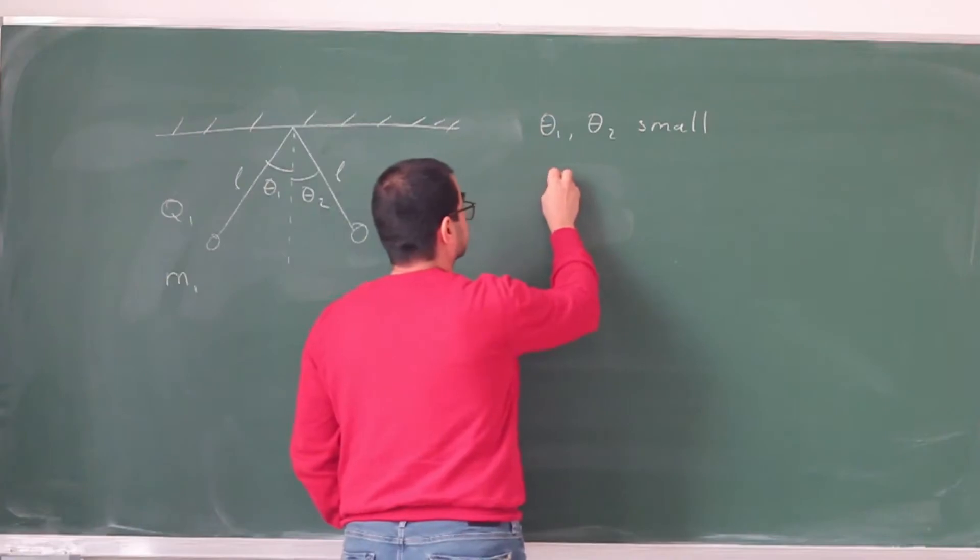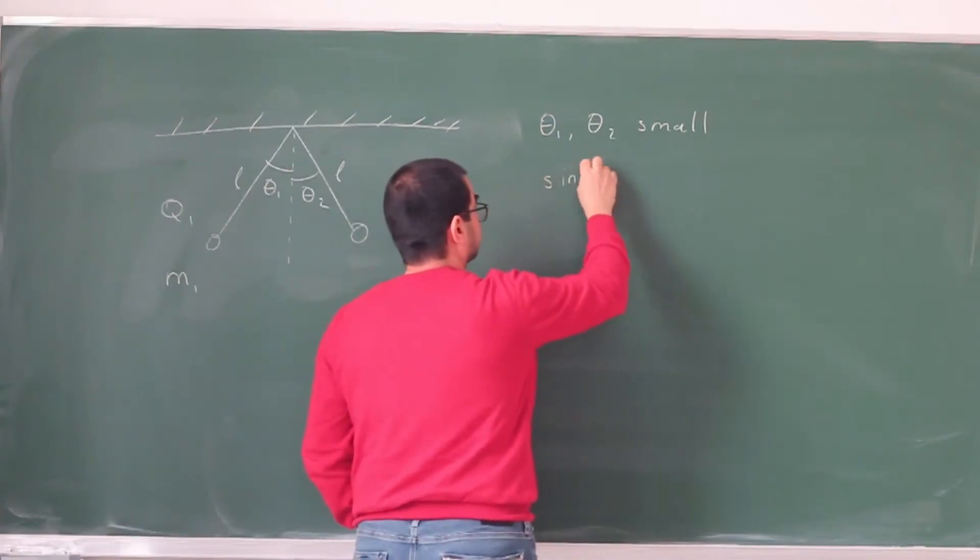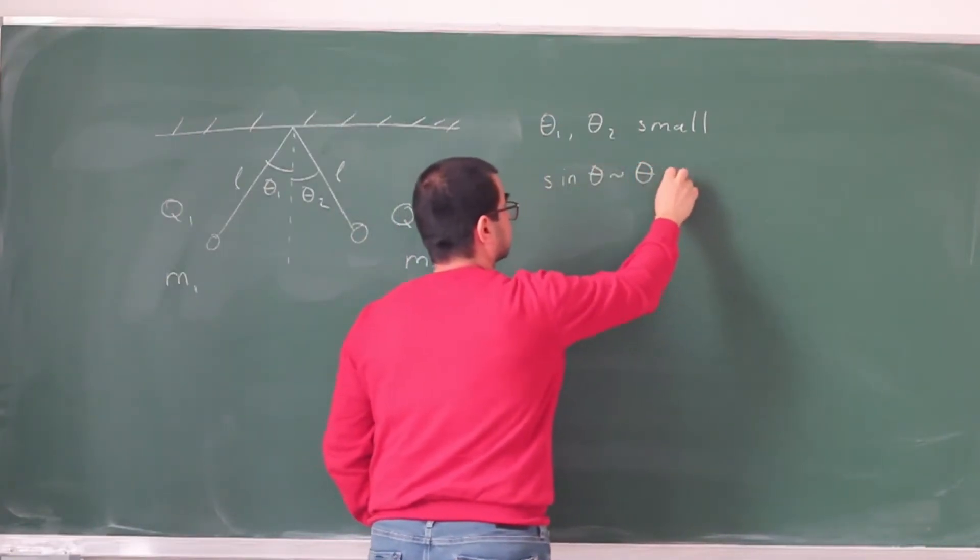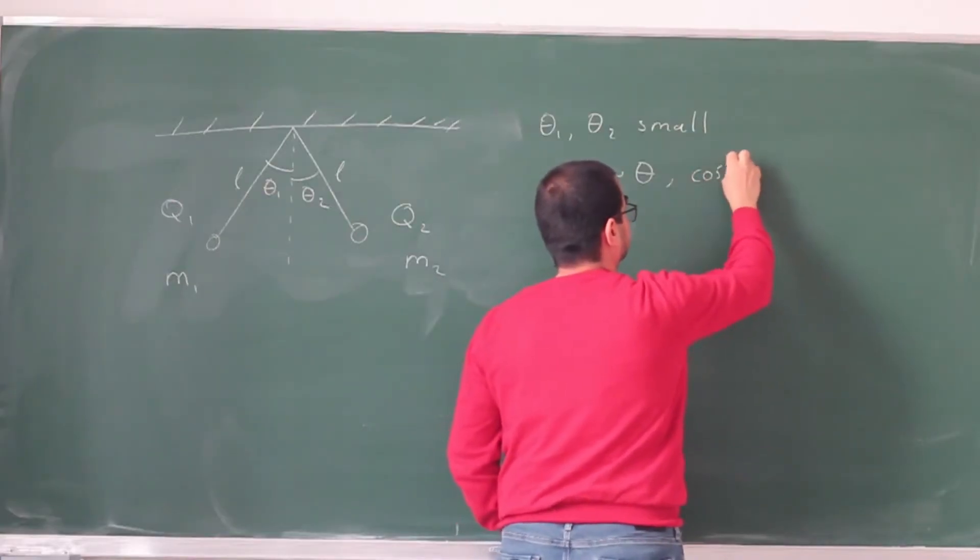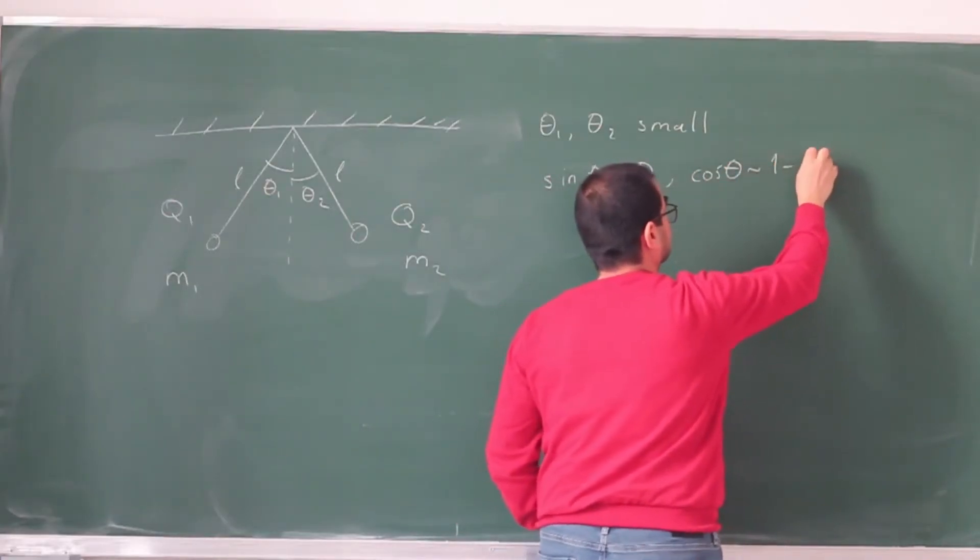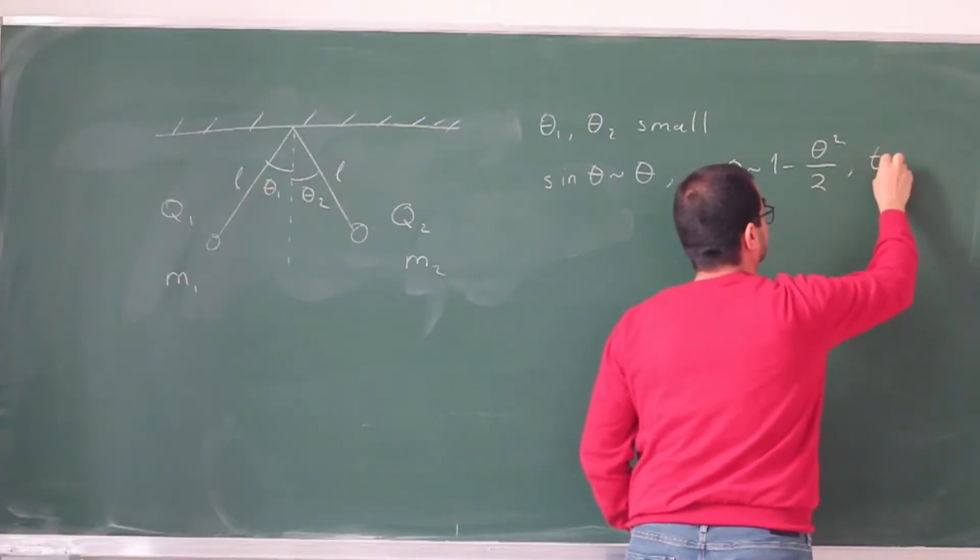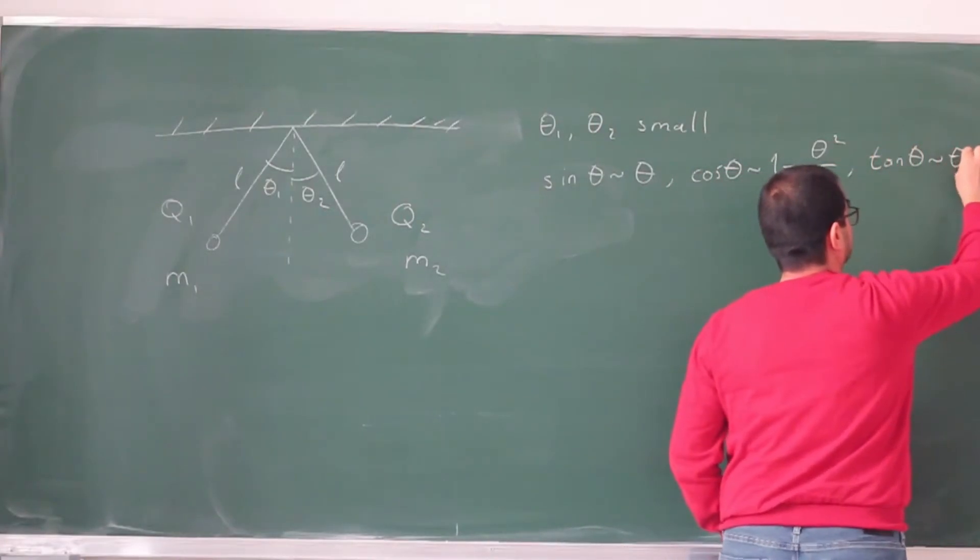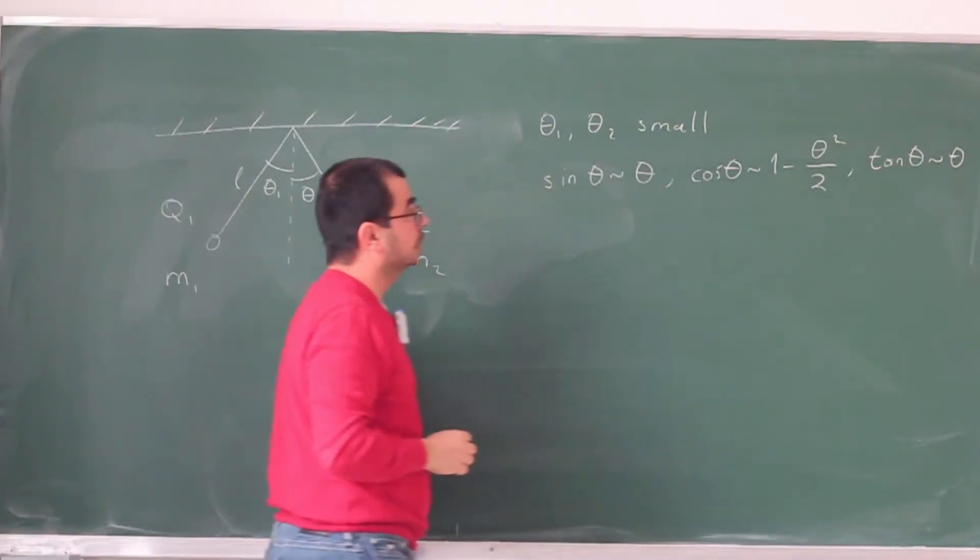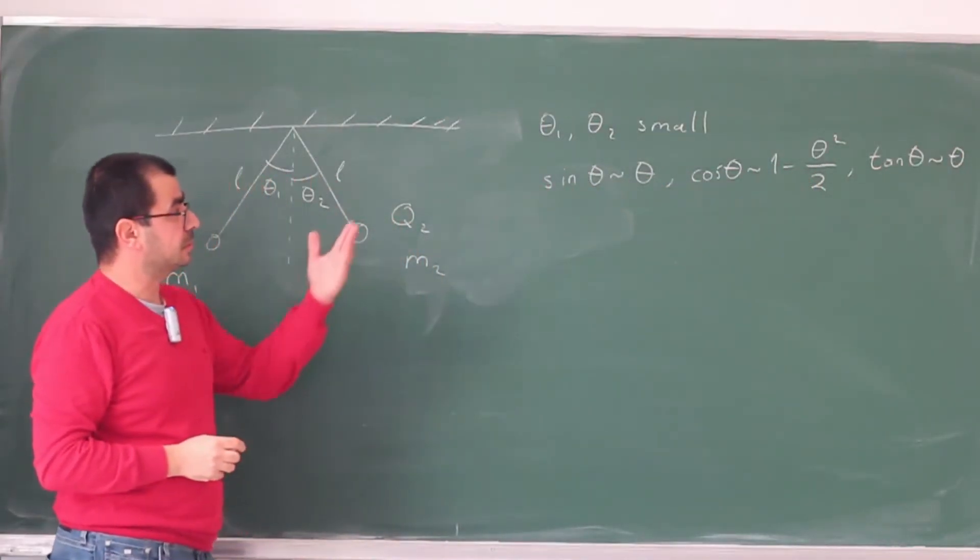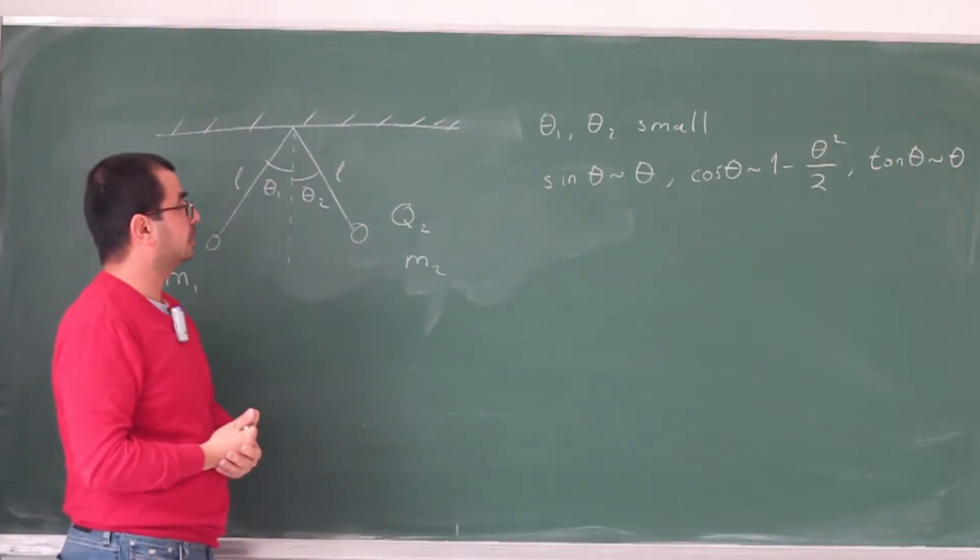Well, a small angle approximation is sine theta is approximately theta, and cosine theta is approximately 1 minus theta squared by 2, and tangent theta is approximately theta as well. So these are small angle approximations. It just follows from Taylor expansion or Maclaurin expansion of these trigonometric functions.